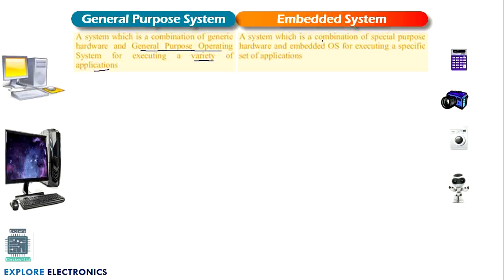But in an embedded system it is a combination of special purpose hardware — not generic hardware. It is special purpose hardware designed for a specific set of applications. Only a specific application will the embedded system perform. If it is a calculator, it will do only calculations and will not do any other functionality. Even in a calculator we will have some software inside, so that system is called an embedded system.